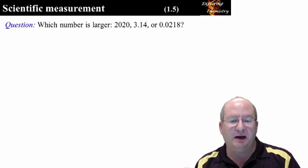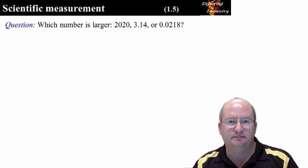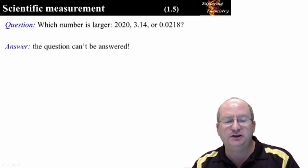This question might be intuitively obvious. However, I would like you to tell me which number is larger: two thousand and twenty, three point one four, or zero point zero two one eight. In fact, this question can't be answered. Without the units, it is impossible to compare these numbers.